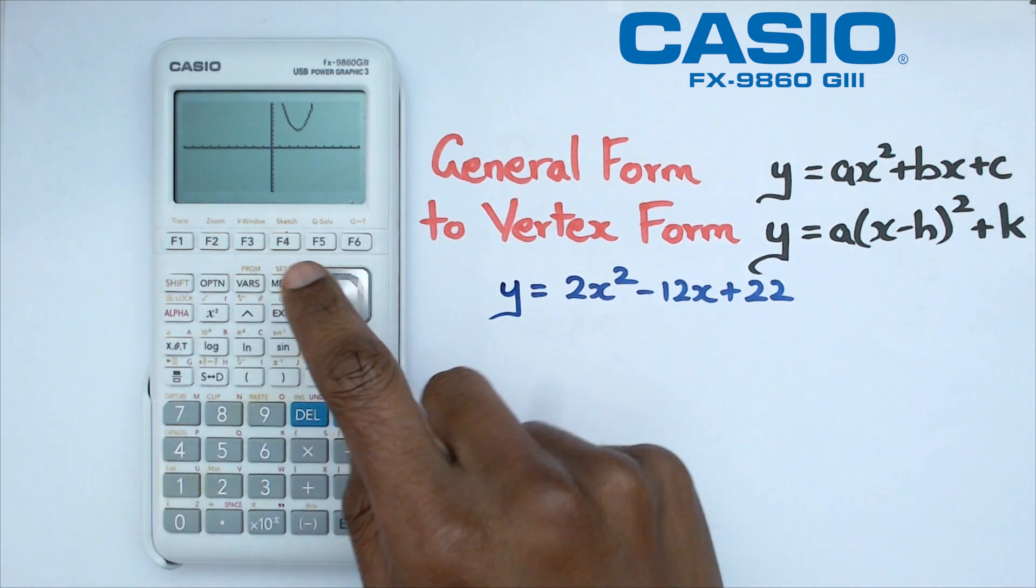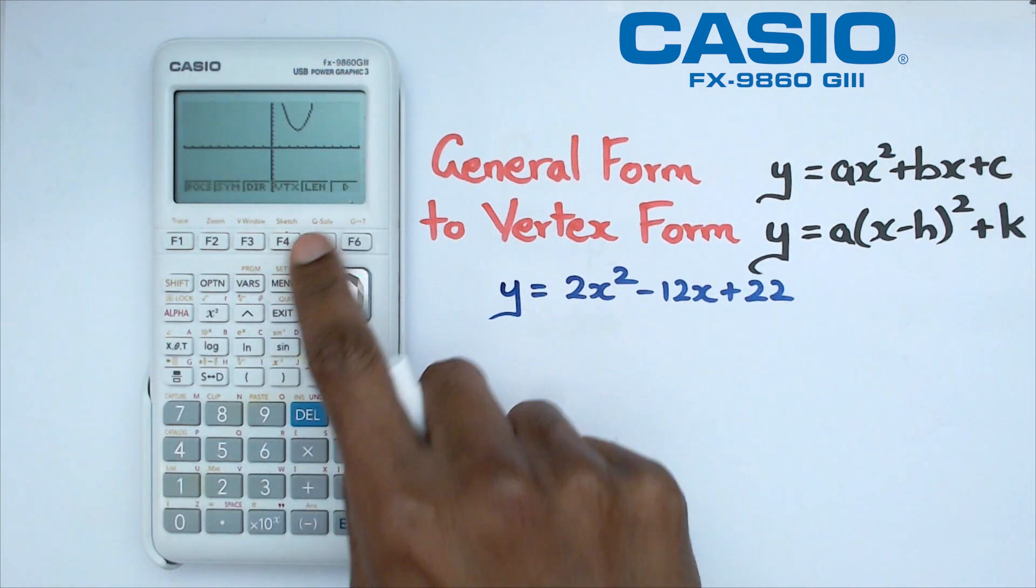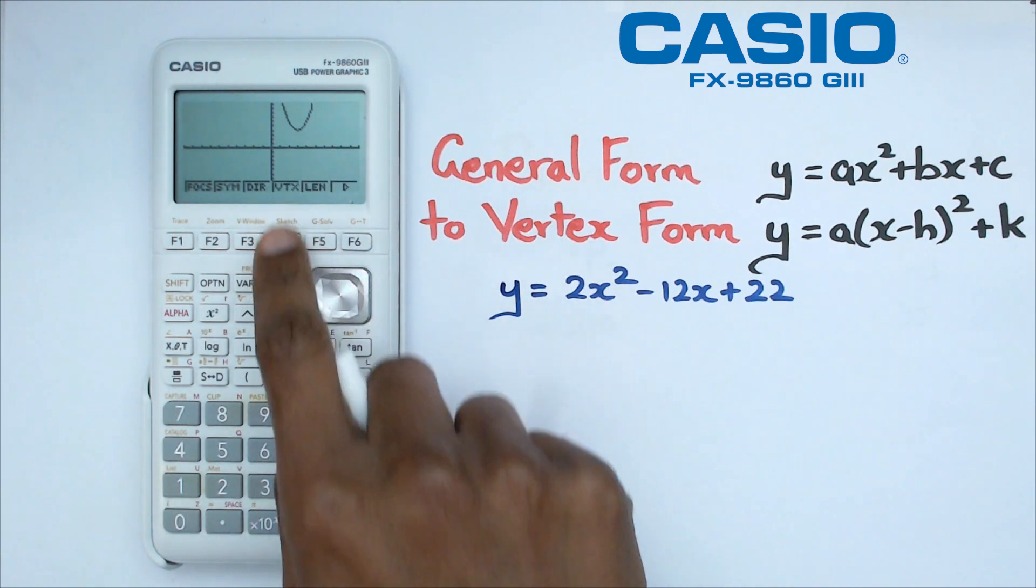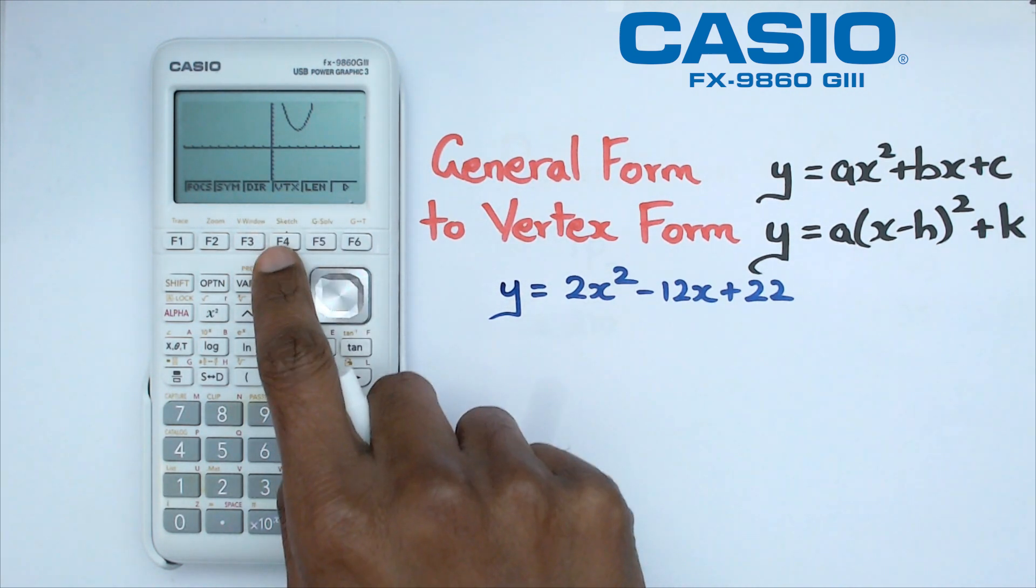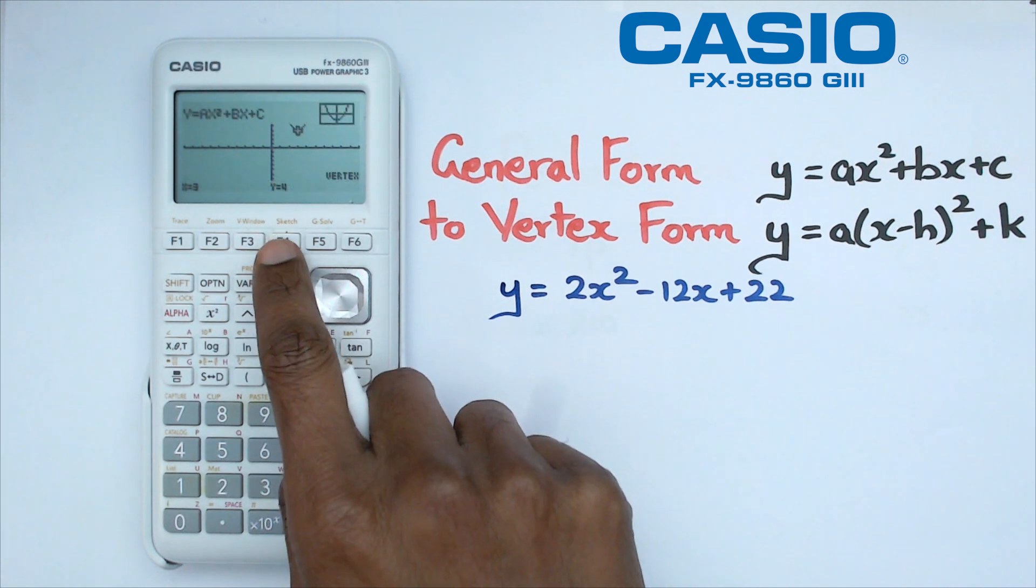We want to figure out what that point is and the way we're going to do that is by clicking on G solve. We're gonna click on G solve and as you can see there's a button called VTX which is for vertex, that's F4. We're gonna click on F4.